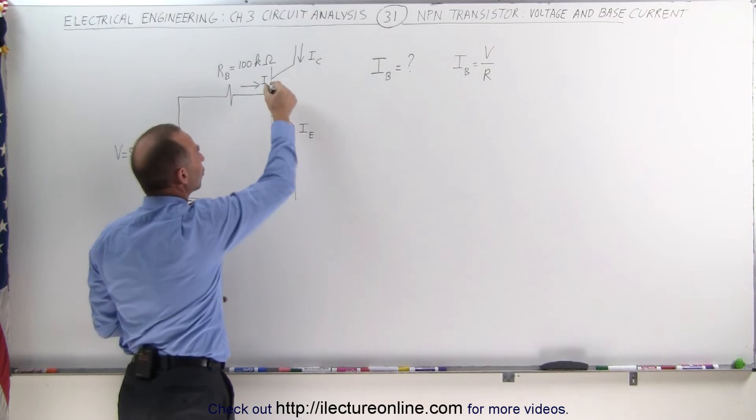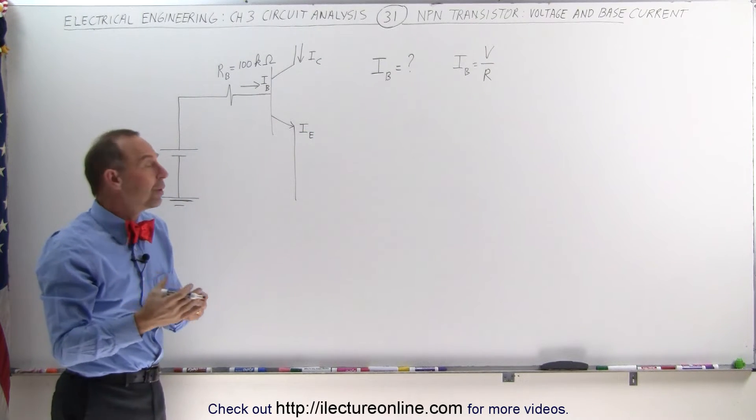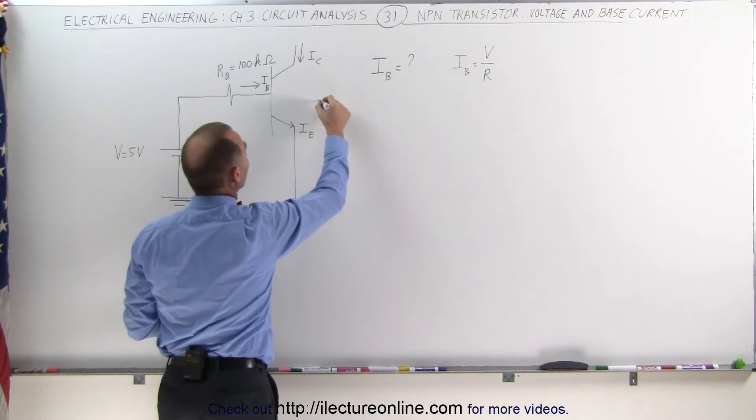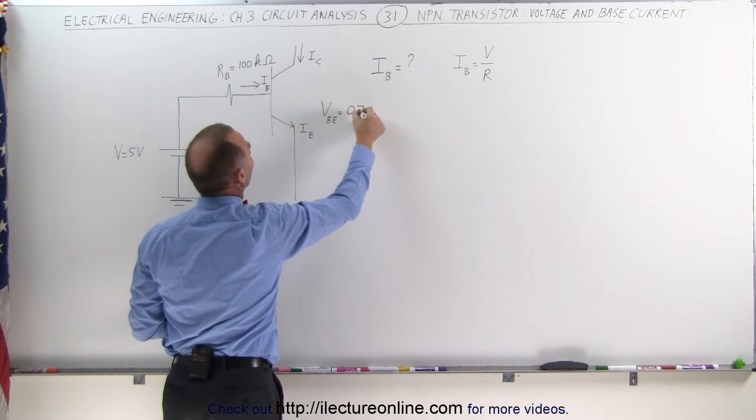Well we can't forget that there's going to be a voltage drop between the base and the emitter. When current begins to flow, it'll begin to flow when the voltage from the base to the emitter is equal to about 0.7 volts.